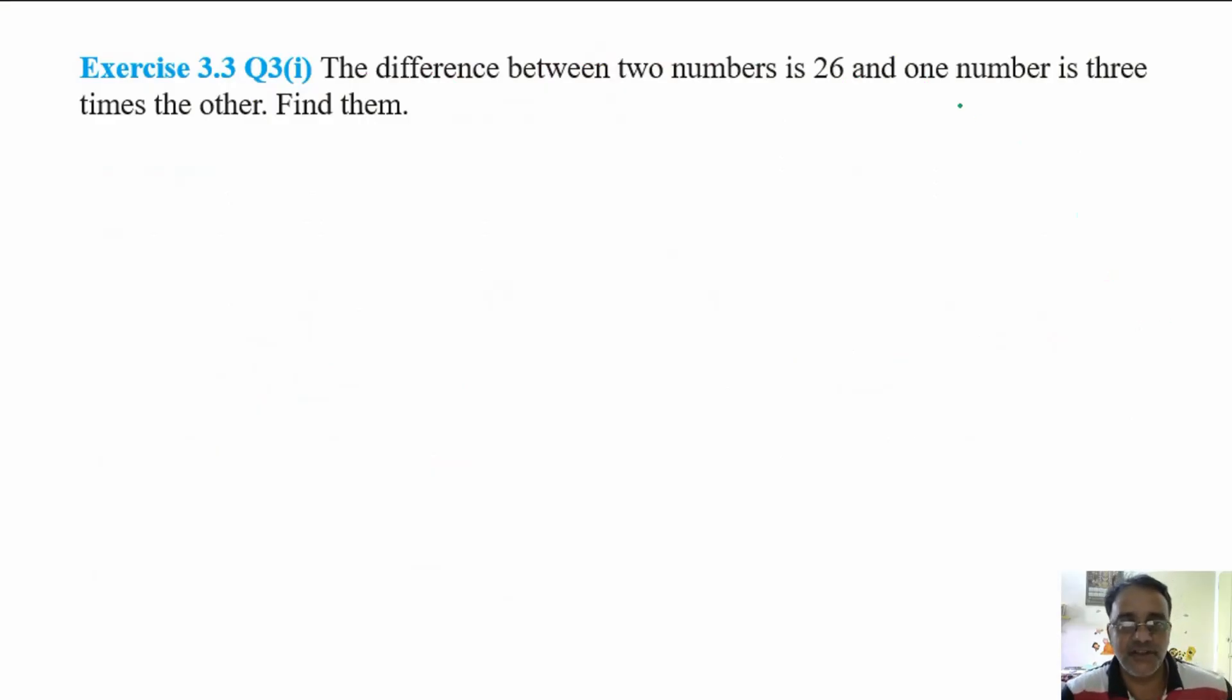This is textbook exercise question: the difference between two numbers is 26 and one number is three times the other number. What is the meaning of this? One number is greater than the other number three times.